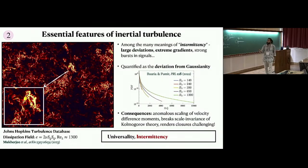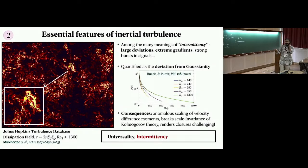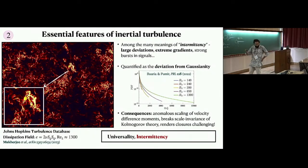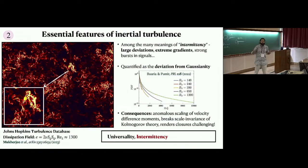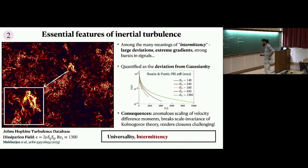The second aspect is intermittency. I'm showing you the dissipation field at slightly higher Reynolds number. The patterns are very different in dissipation compared to kinetic energy — you see very intense, condensed structures while most of the field remains quiescent. If you put a probe inside a turbulent flow and measure gradients, vorticity, or dissipation, you typically get a very flat signal most of the time with sudden bursts — that's intermittency. This leads to very non-Gaussian fat tails in distributions.